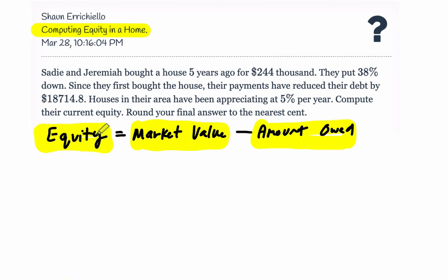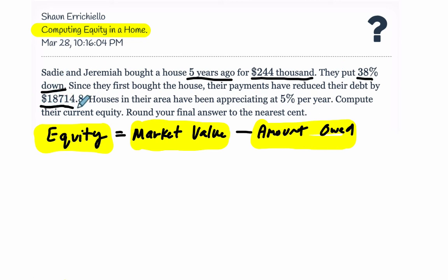So we want to find these things, and in this problem we have enough information to do that. Sadie and Jeremiah bought a house five years ago for $244,000. They put 38% down. Since they first bought the house, their payments have reduced their debt by $18,714.80. Houses in their area have been appreciating at 5% per year. Compute their current equity, rounded to the nearest cent.